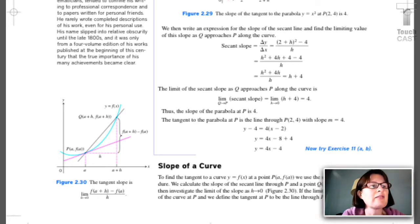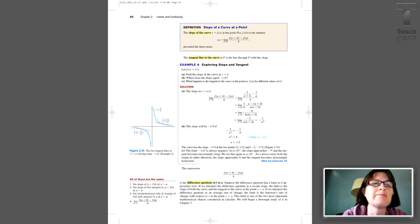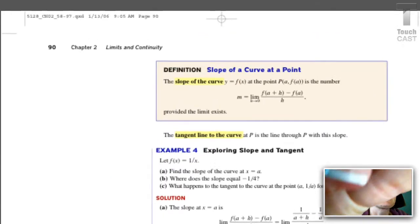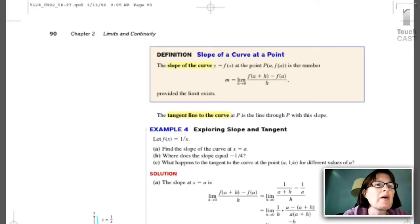So we have that definition on the next page. This is the big deal for this section. The slope of a curve at a point, the slope of F at A, F is the limit as H approaches zero of F of A plus H minus F of A over H. Get this into your notes. It's critically important. It's going to definitely show up in the AP test.